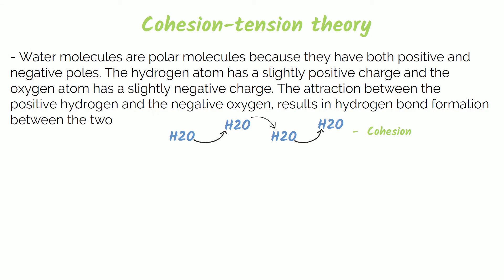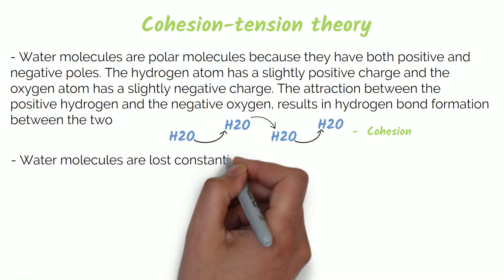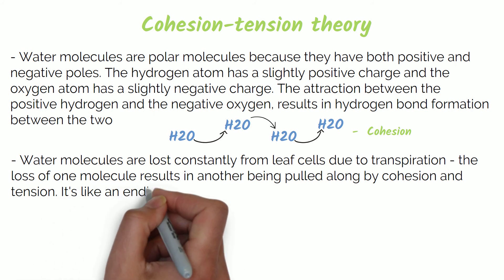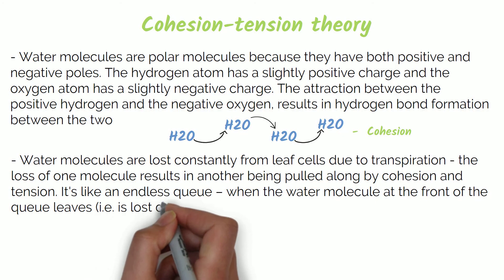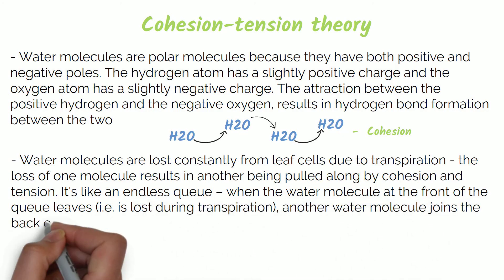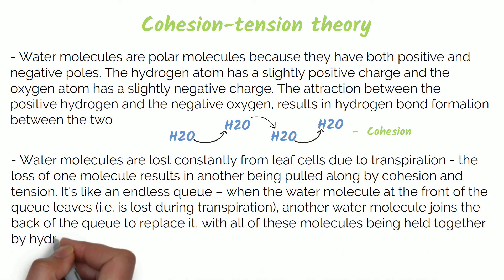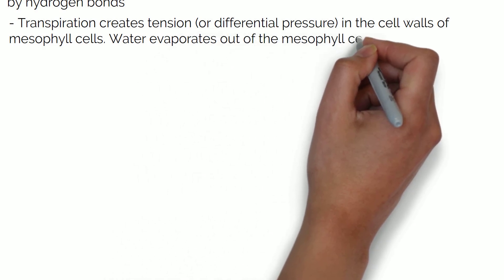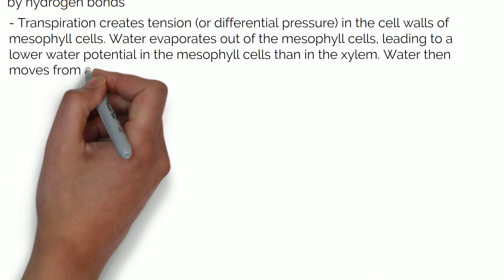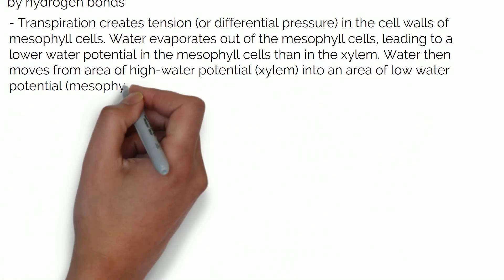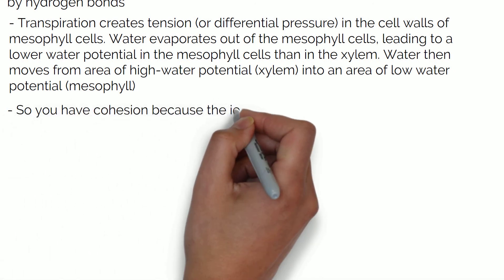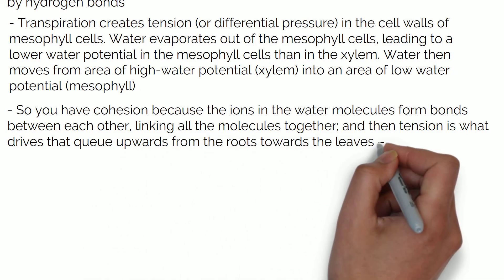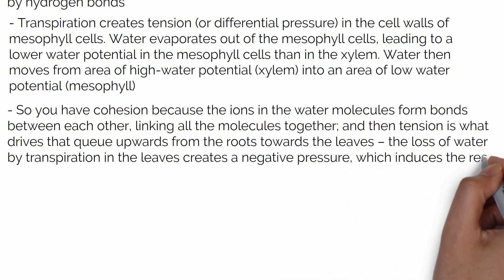This cohesion pulls water from the roots through the xylem and to the leaves. Water molecules are lost constantly from the leaf cells due to transpiration. The loss of one molecule results in another being pulled along by cohesion and tension — this is like an endless queue. When the water molecule at the front of the queue leaves during transpiration, another water molecule joins the back of the queue to replace it, with all molecules being held together by hydrogen bonds. Transpiration creates tension or differential pressure in the cell walls of mesophyll cells. Water evaporates out of the mesophyll cells, leading to a lower water potential in the cells than in the xylem. Water then moves from an area of high water potential in the xylem to an area of low water potential in the mesophyll. So cohesion means the water molecules form bonds between each other linking all molecules together, and tension is what drives that queue upwards from the roots towards the leaves, as the loss of water by transpiration in the leaves creates a negative pressure which induces the rest of the queue to move up.